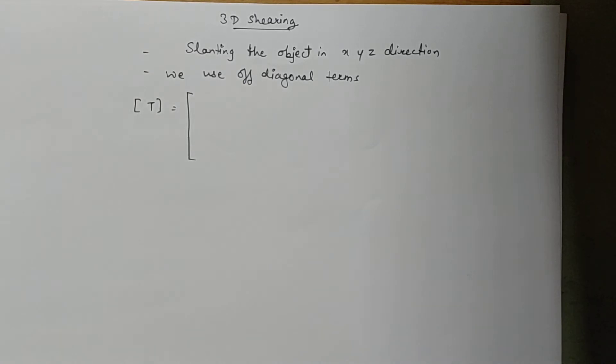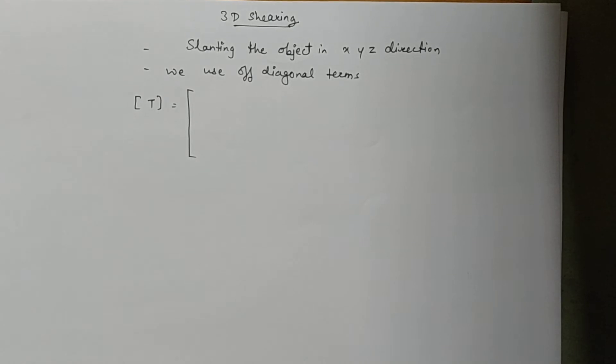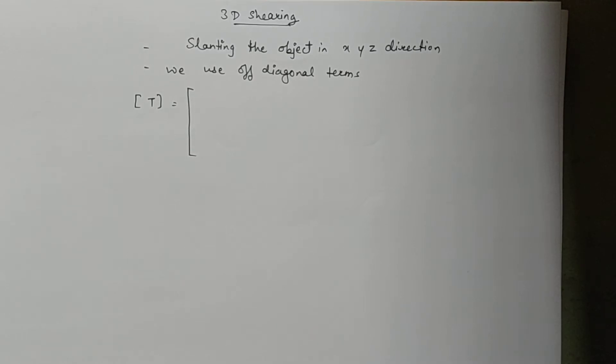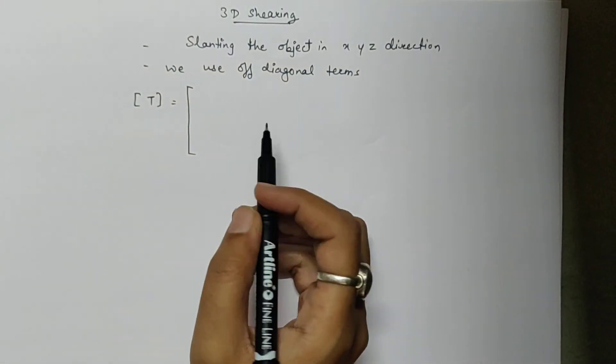Hello students, today we will be seeing 3D shearing. As we know, shearing means slanting the object in x, y, z direction - that is, changing the shape of the object. For 3D shearing, we use off-diagonal terms. In scaling, we used diagonal terms only, but in shearing we use off-diagonal terms.